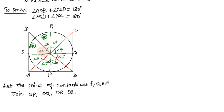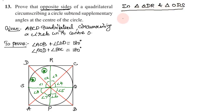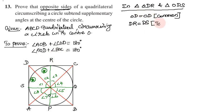This triangle is congruent; angle 1 equals angle 2. So first, consider triangle ODR and triangle ODS. The center point is O. In triangle ODR and triangle ODS: OD is common side, so OD equals OD. DR and DS are equal - why? Because they are tangents drawn from the same point D. Therefore, by SSS criteria, triangle ODR is congruent to triangle ODS.